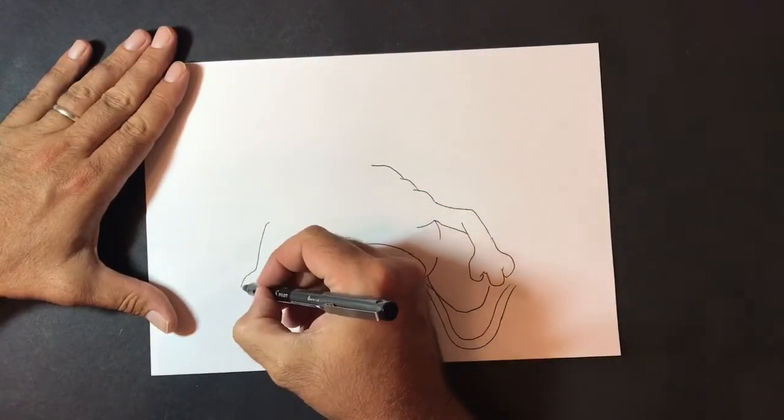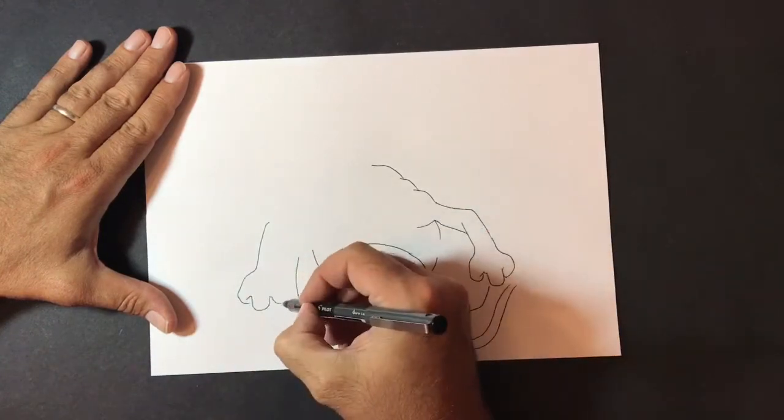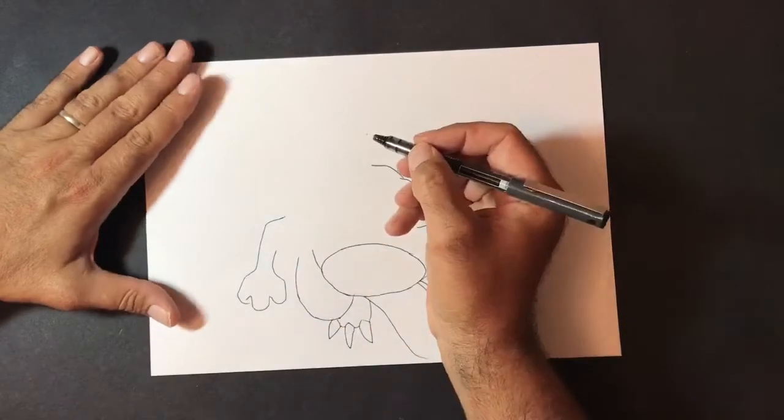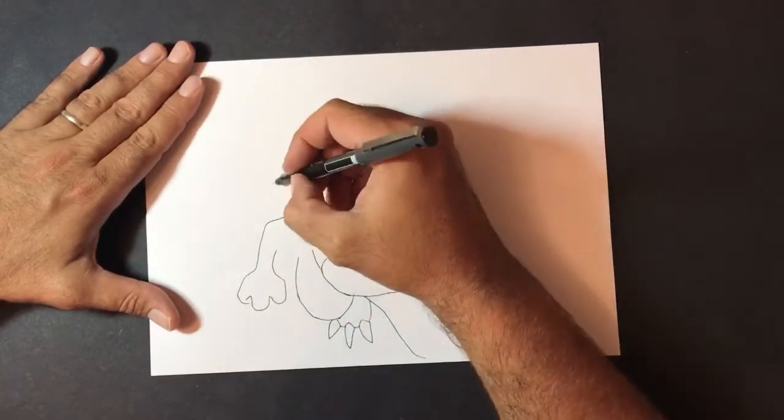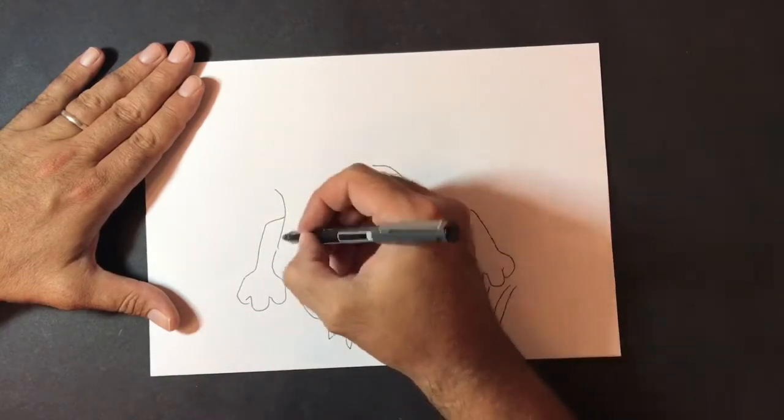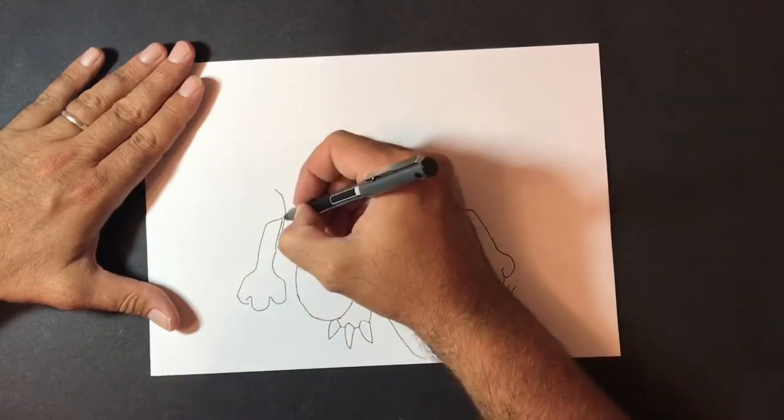He's got some lovely big wings up over his shoulders and he's got a fiery tail, which is very similar to the Charmander character. If you've not watched the Charmander character drawing tutorial, then have a little look at it. It's down below in my videos.